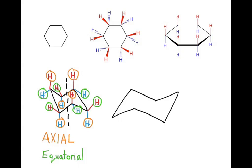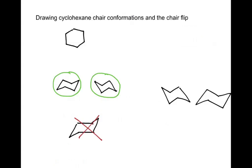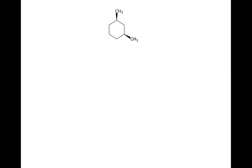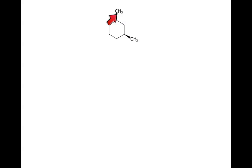So let's do this again for the other chair conformer. What we're going to see is that any time you draw a cyclohexane, there are actually two chair conformers — this undergoes something called a ring flip. Now let's look at an example when we have some substituent groups coming off the cyclohexane. The molecule drawn here would be cis, because the two methyl groups are on the same side — both are wedges. This is cis-1,3-dimethylcyclohexane, and we want to draw the proper chair conformations for this structure.